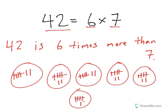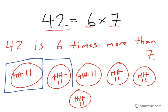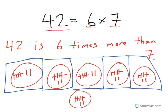6 times more than 7. Because right here, we have one group of 7 — I'll put a square around it in blue. That's one group of 7. How much did it take to get to 42? Well, it took 6 of those, or 6 times more than that one group. That is why multiplication can be used as comparisons as well. In this case, it says 42 is 6 times more than 7.